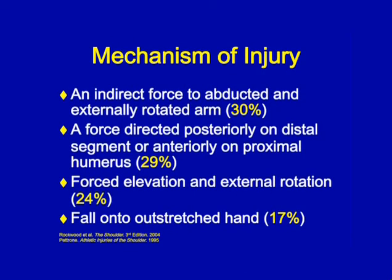As far as the mechanism of injury, the typical mechanism is that 90-90 position — an indirect force to the abducted and externally rotated arm, a force directed posteriorly on a distal segment, or conversely, anteriorly on the proximal humerus. Additionally, a forced elevation with external rotation, or the classic fall onto an outstretched hand. However, that fall mechanism is primarily seen in an older population, not as much in an athletic population.